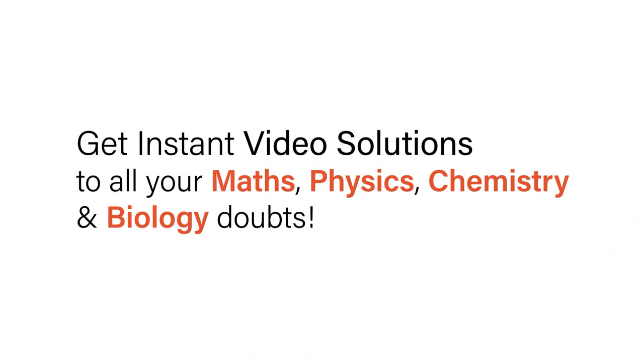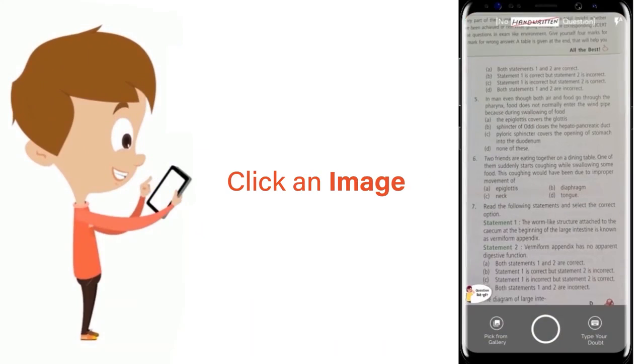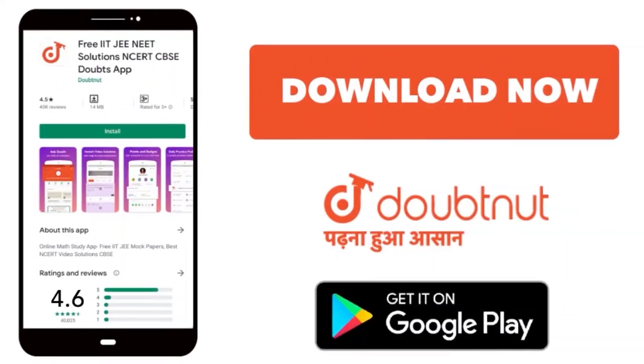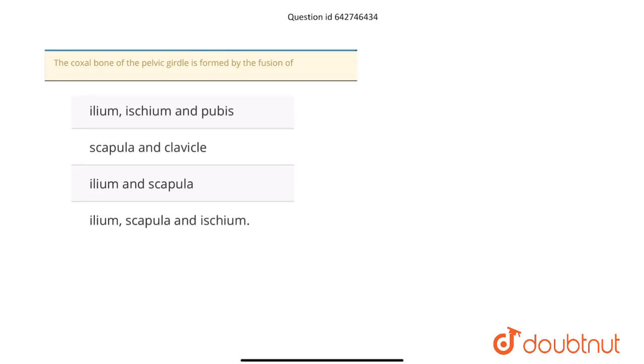With Doubtnut, get instant video solutions to all your math, physics, chemistry, and biology doubts. Just click the image of the question, crop the question, and get an instant video solution. Download Doubtnut app today. The question is: the coxal bone of the pelvic girdle is formed by the fusion of...